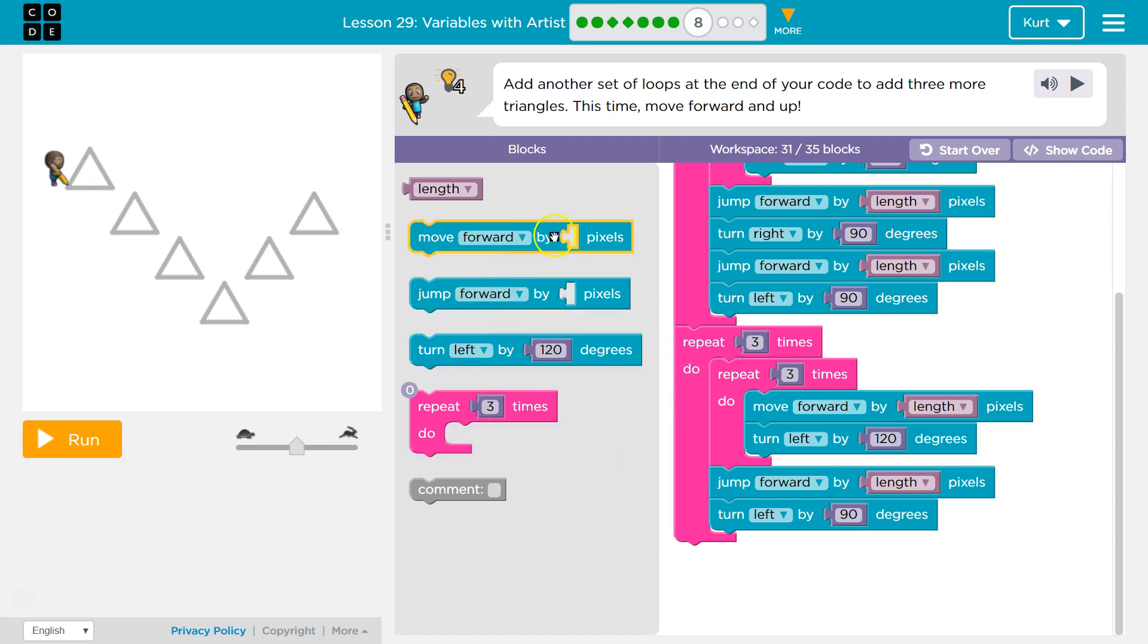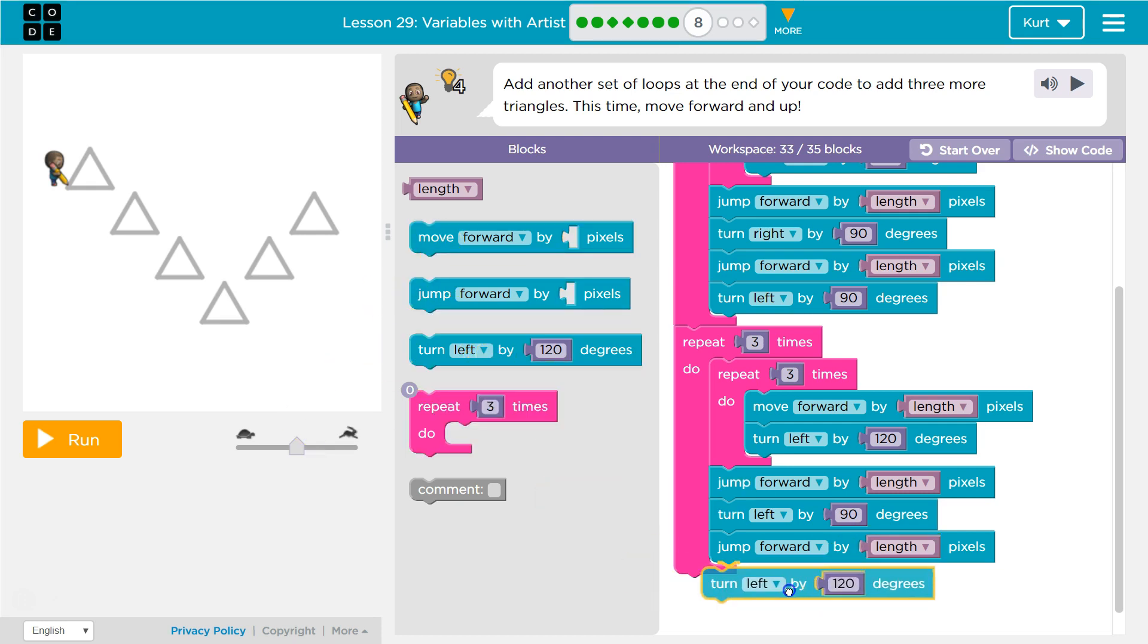Then I want to jump again, jump forward by, and how much? Well, 50. And then, let's see, I jump forward by 50, I then want to turn right, so I can be facing this direction.